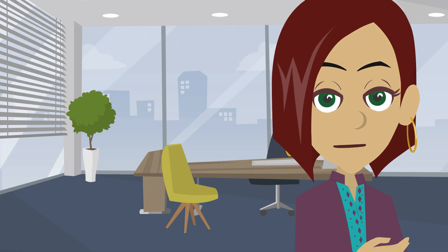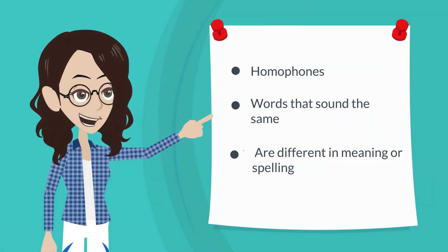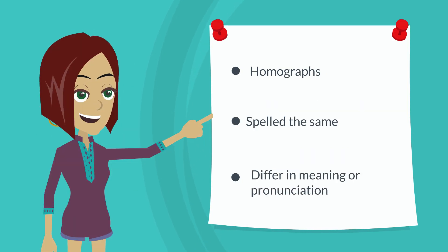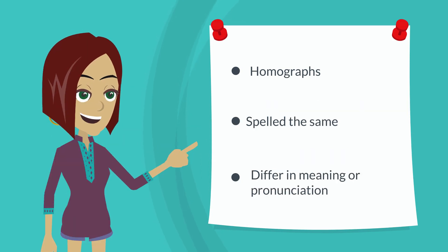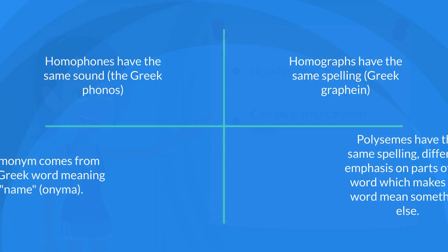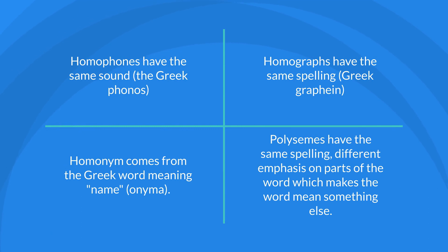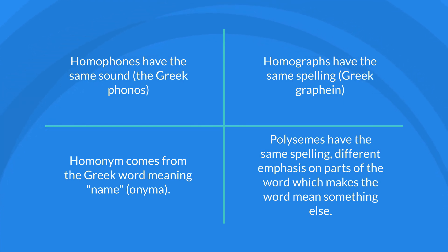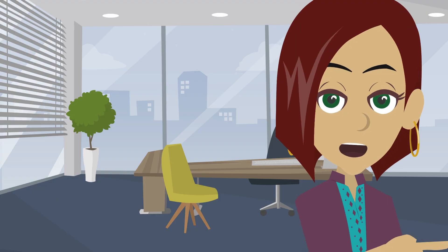To sum it up: homophones are words that sound the same but are different in meaning or spelling. Homographs are spelled the same but differ in meaning or pronunciation. Homonyms can be either or even both. To help remember, think of the etymology: homophones have the same sound from the Greek 'phonos'; homographs have the same spelling from the Greek 'graphion'; homonym comes from the Greek word for name; and polysemes have the same spelling with different emphasis on parts of the word, which makes the word mean something else.